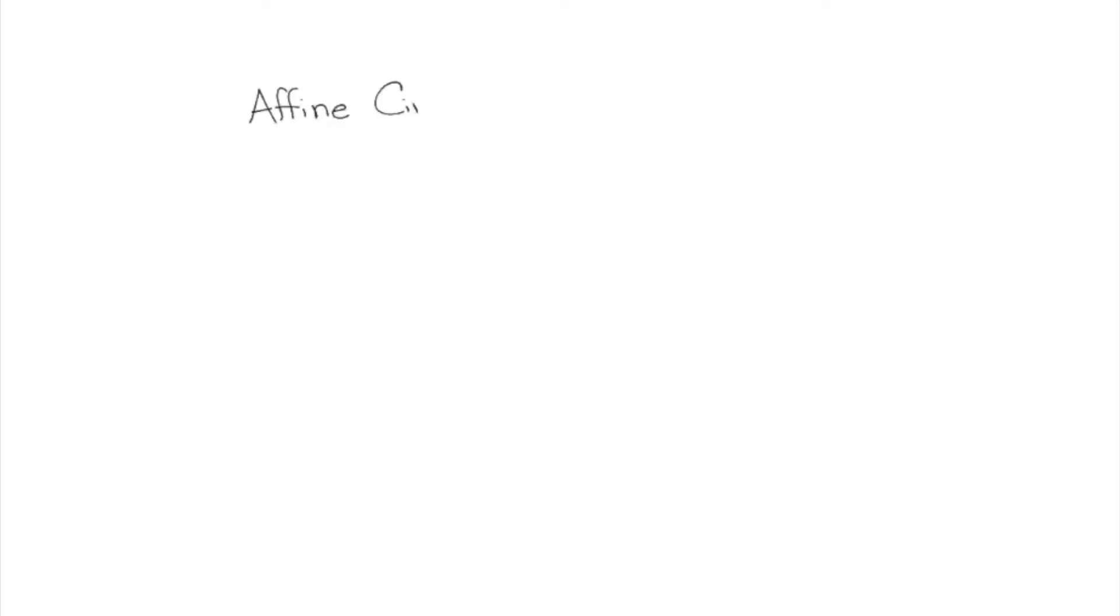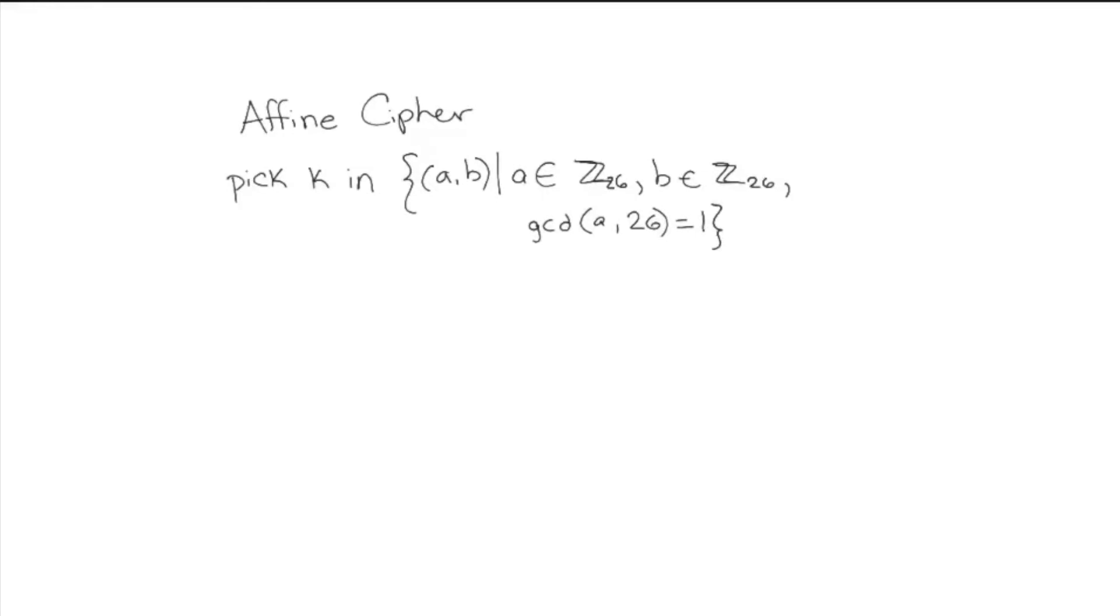Okay, so today we're going to be talking about the affine cipher. So to start, we're going to pick a k, which is our key, and it is a tuple where a is a value between 0 and 25, b also has to be a value between 0 and 25, and we also have the constraint that the greatest common divisor of a and 26 has to be 1, and I'll explain a little bit more about why that's important later.